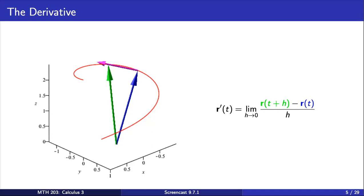As h approaches 0, this average rate of change approaches the instantaneous rate of change of r at the point t. The instantaneous rate of change of r at the point t is the derivative of r at t.